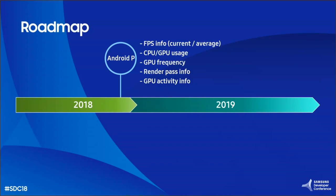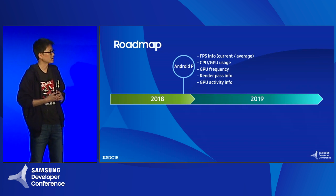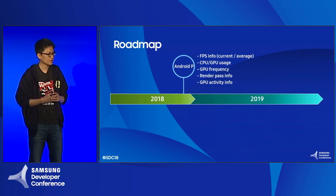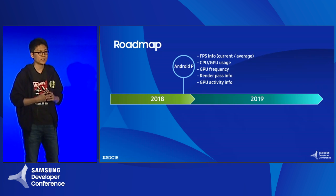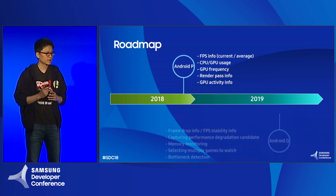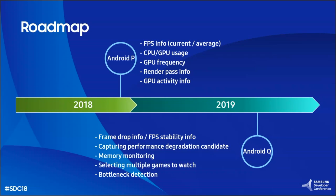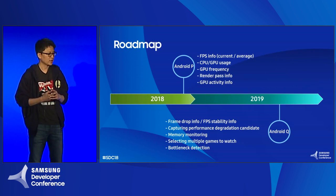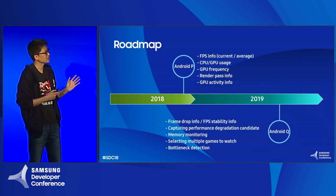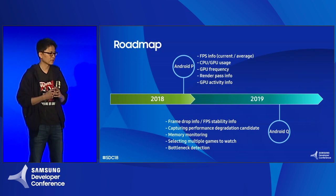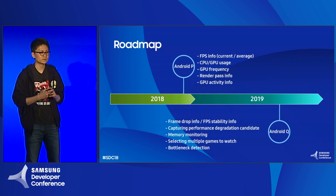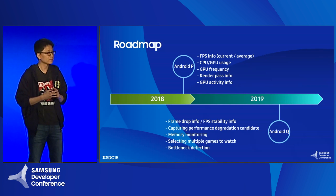Finally, here is our roadmap. On Android P, we'll include GPU Archie in Galaxy devices so you can use it on Galaxy devices on Android P. We'll include the features I explained. For the next Android release, we are planning to add more features: frame drop information, FPS stability information, capturing performance degradation candidates rather than arbitrary frames, memory monitoring, selecting multiple games to watch, and bottleneck detection. We are investigating more features to help developers. Thank you very much.